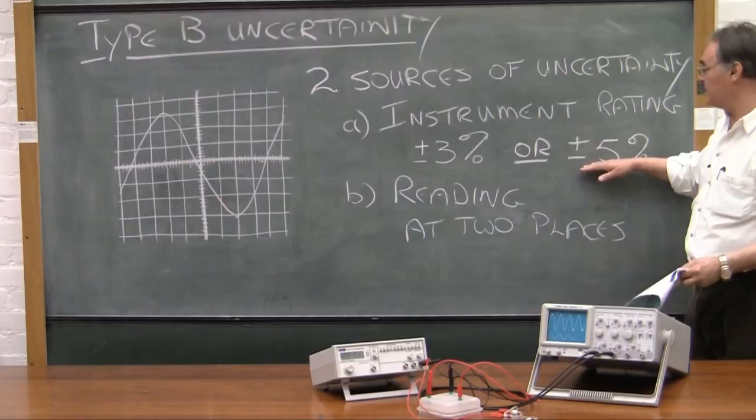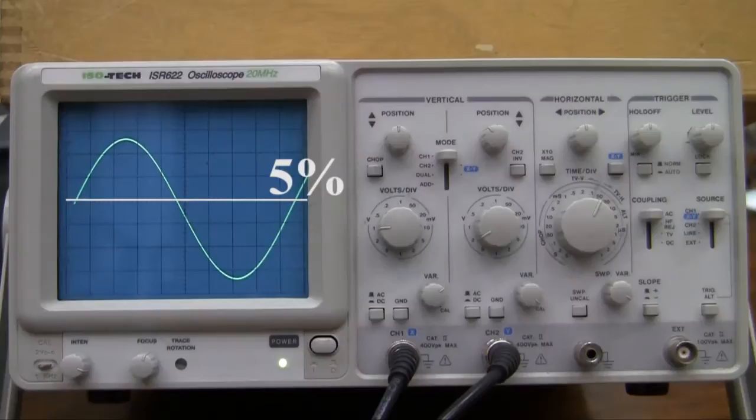On the time scale, the uncertainty is plus minus 5%.